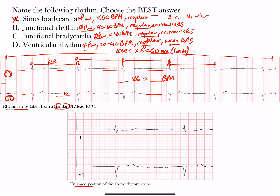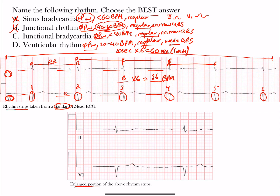Counting the QRS complexes: one, two, three, four, five, six. So our rate is approximately 6 complexes times 6 equals 36 beats per minute. Knowing that, we can see that junctional rhythm — with a rate between 40 and 60 — doesn't meet that criteria and can be crossed out. It also doesn't meet sinus rhythm criteria, since there are no P waves.